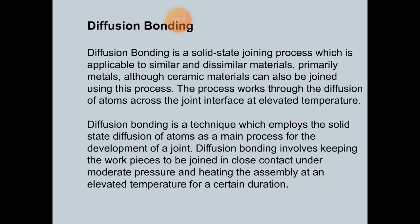Then number 3rd one is a diffusion bonding. It is also the important one process. Diffusion bonding is a solid state joining process which is applicable to similar and dissimilar material, primarily metals. Then ceramic materials can be also joined using the process. The process works through the diffusion of atoms across the joint interface at elevated temperature. Diffusion bonding is a technique which employs the solid state diffusion of atoms as a main process for development of a joint. Diffusion bonding involves keeping the workpiece to be joined in close contact under moderate pressure and heating the assembly at an elevated temperature for a certain duration.